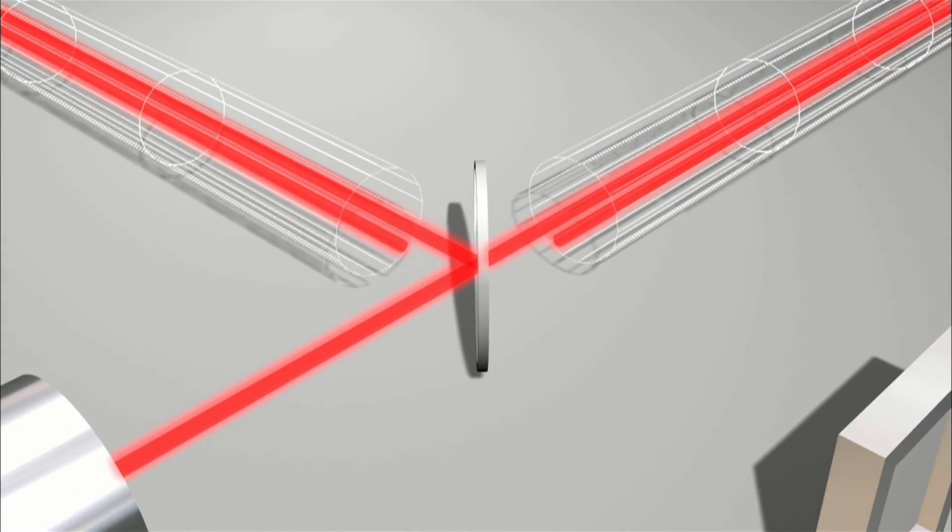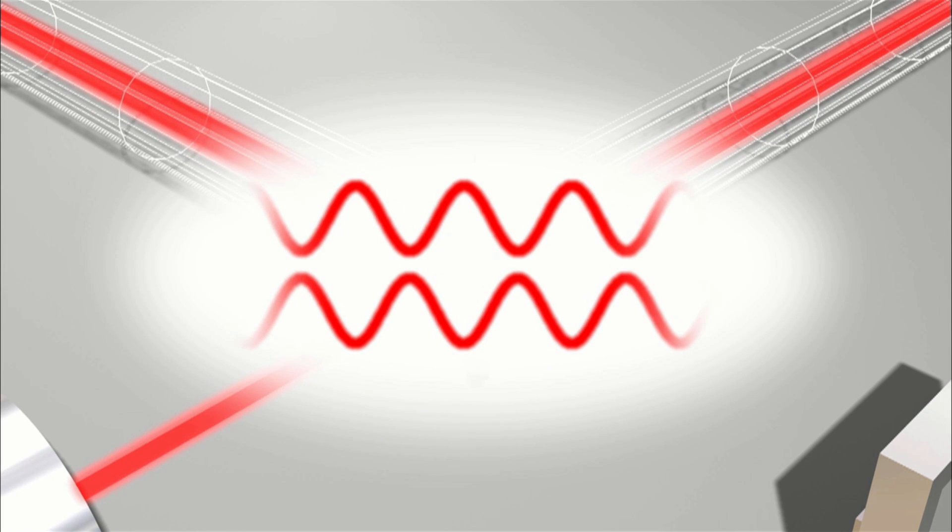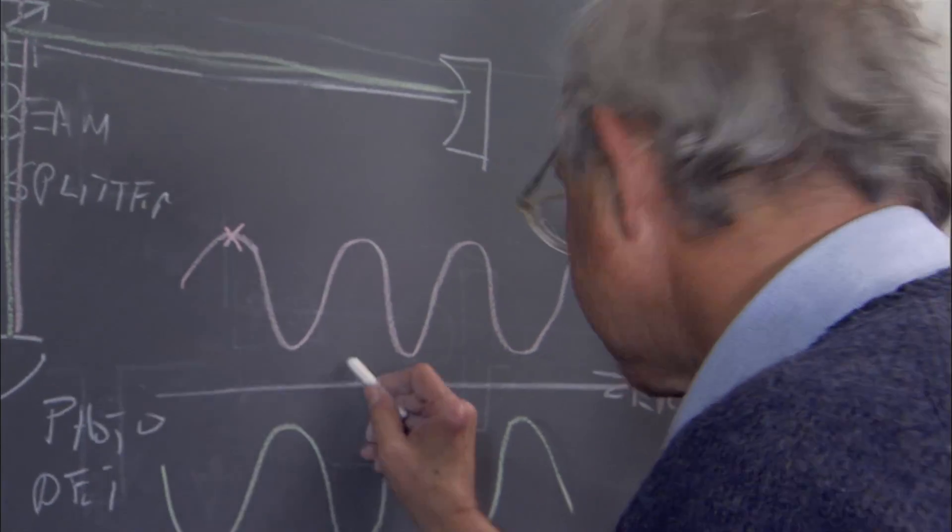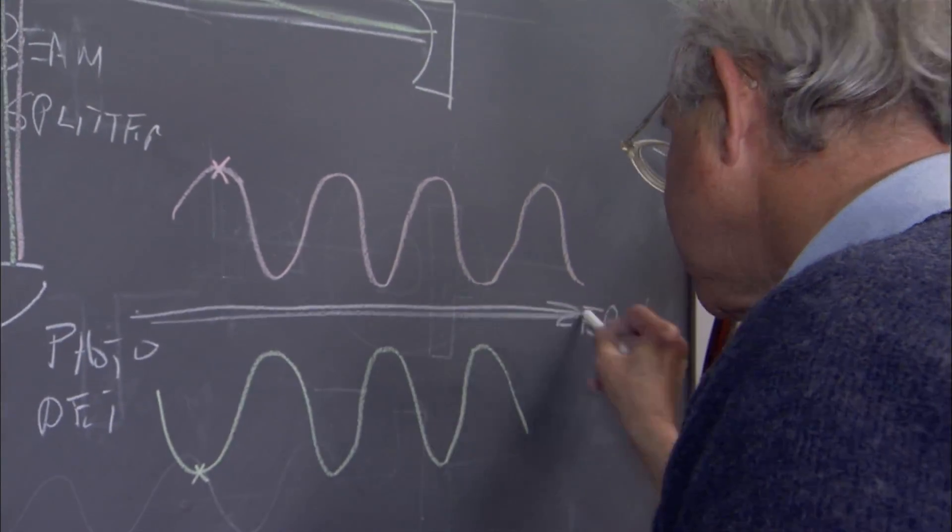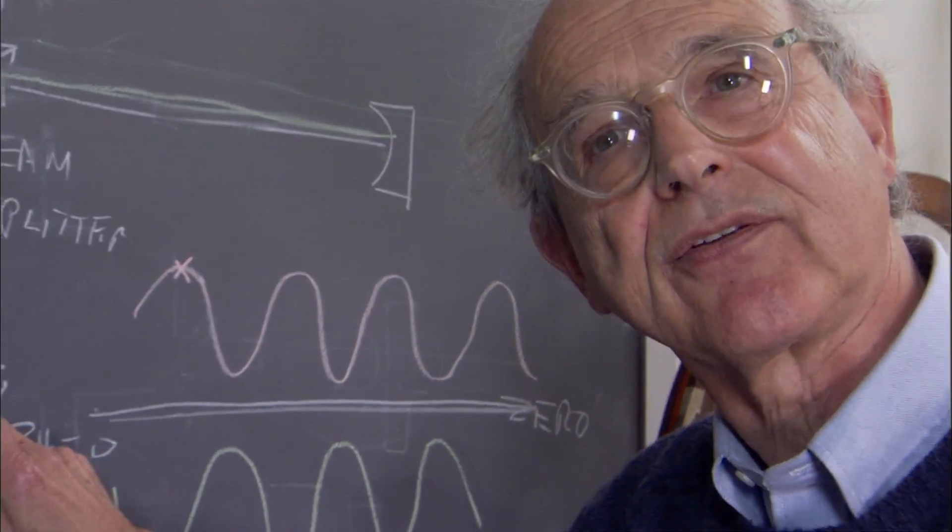The light waves come back lined up in such a way that they cancel each other out. And you add them together, you get nothing, you get a zero, a big fat zero. No light gets detected at the photodetector.